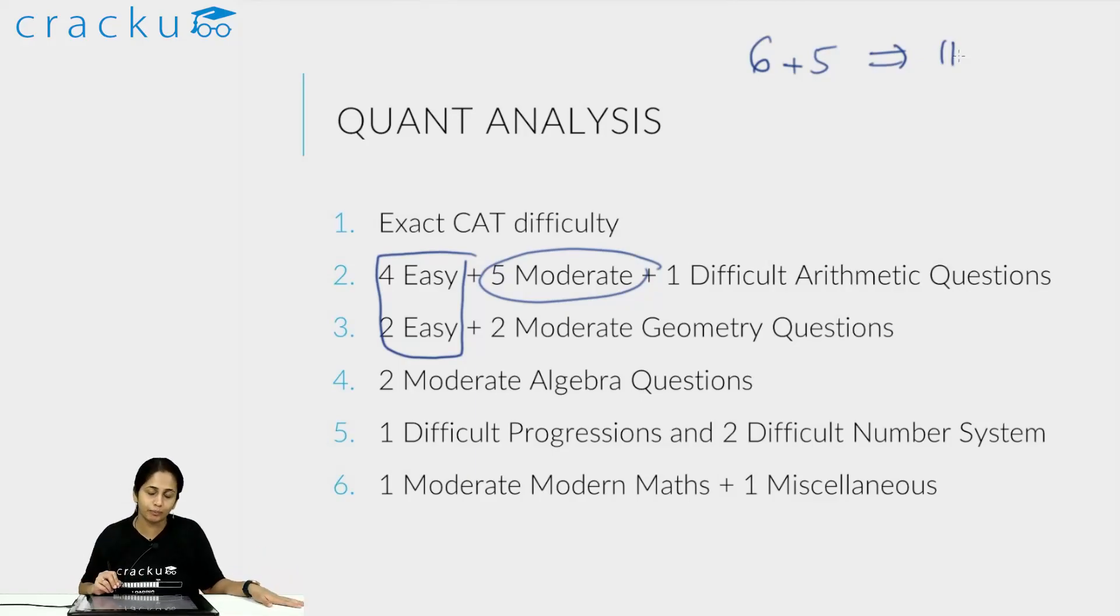If you even target those kind of 11 questions, you will be clearing the cutoff in actual CAT. Remember one of the most important things is that if you get the easy questions from arithmetic and geometry and the moderate questions from even arithmetic, it should be enough to actually clear or be nearly enough to clear the cutoff. From there, you have geometric moderate questions, you have questions from algebra that you can solve. There was one question from modern maths from logarithms which is solvable. All of those one, two additional moderate difficulty questions you can then solve to take this 11 to like 16 where you will be comfortably clearing any kind of cutoff.